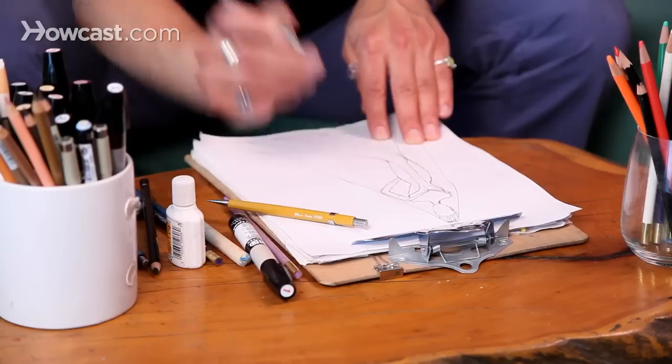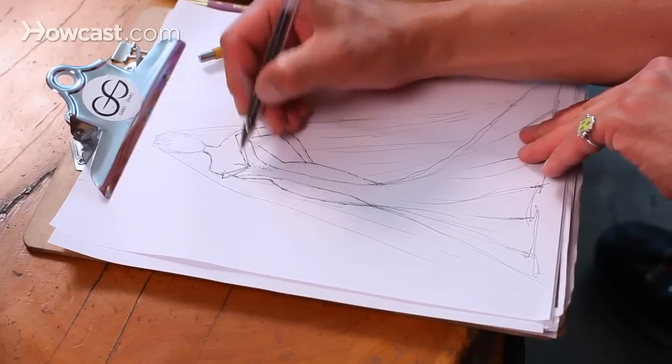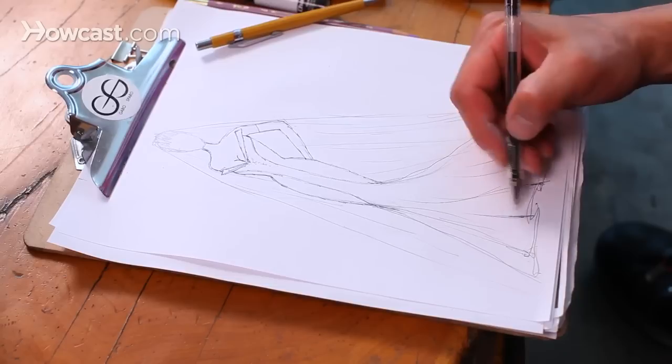And she's going to have opera length gloves, why not? You want to give her some cleavage because she is wearing a corset gown—that's the plan at least.